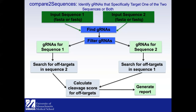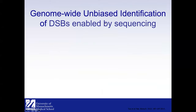The second workflow, compare-two-sequences, has almost all the same parameters and allows you to find guides that specifically target one or both input sequences. You can tune parameters to tailor it to your needs. GUIDEseq is another related package — after you identify your best guide in silico, you perform an experiment to get unbiased genome-wide identification of off-target cleavages.